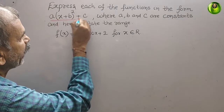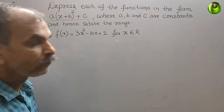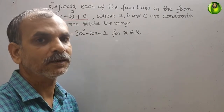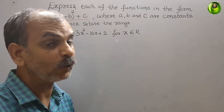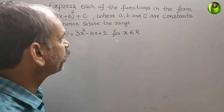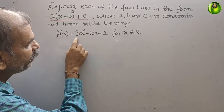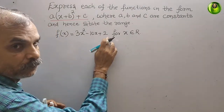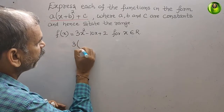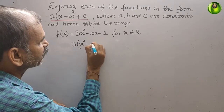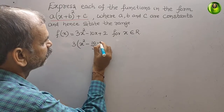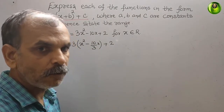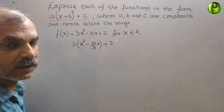Since there is a minus sign here, we will make it in the form (a - b)². To do that, we first take 3 as common factor. After taking 3 as common, we get 3 times (x² - 10/3 x + 2).